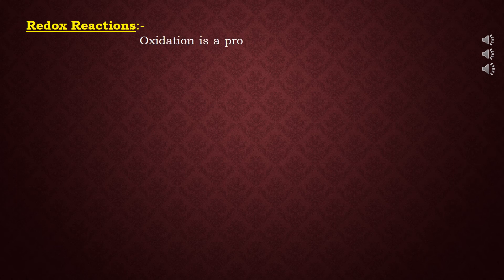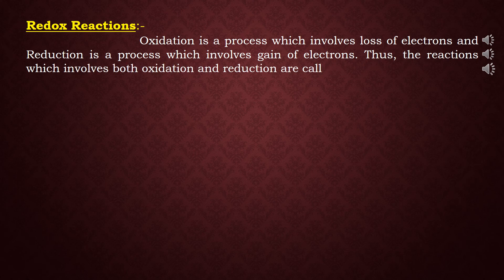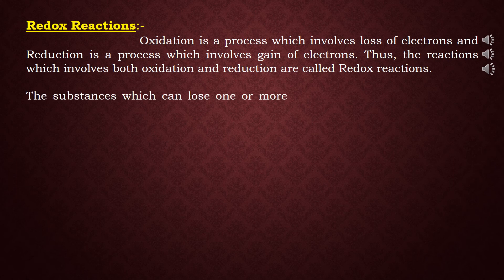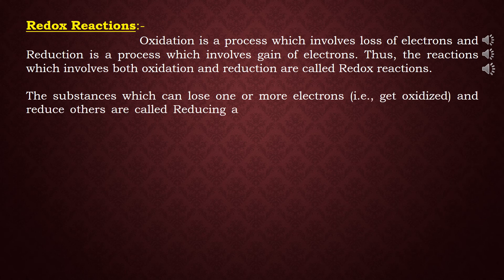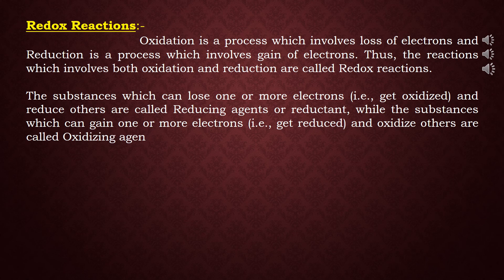As we have learnt in a previous class, oxidation is a process which involves loss of electrons, and reduction is a process which involves gain of electrons. Reactions which involve both oxidation and reduction are called redox reactions. Substances which lose one or more electrons, getting oxidized and reducing others, are called reducing agents or reductants, while substances which gain one or more electrons, getting reduced and oxidizing others, are called oxidizing agents or oxidants.